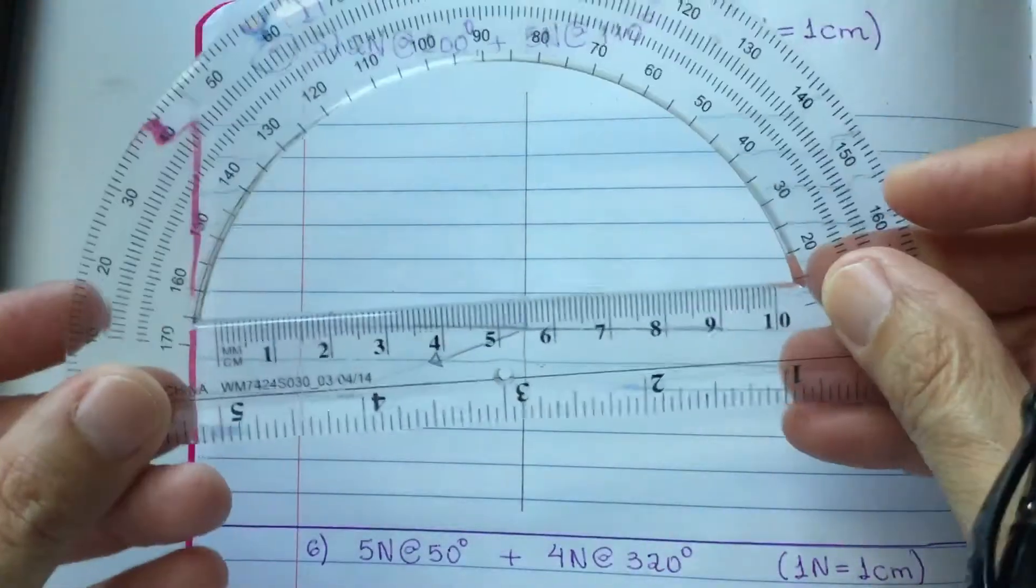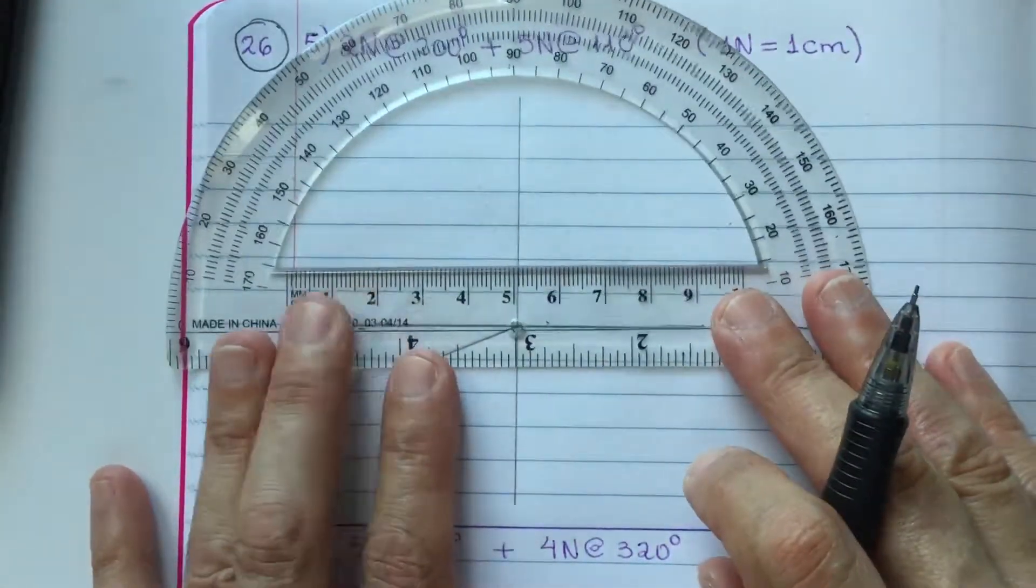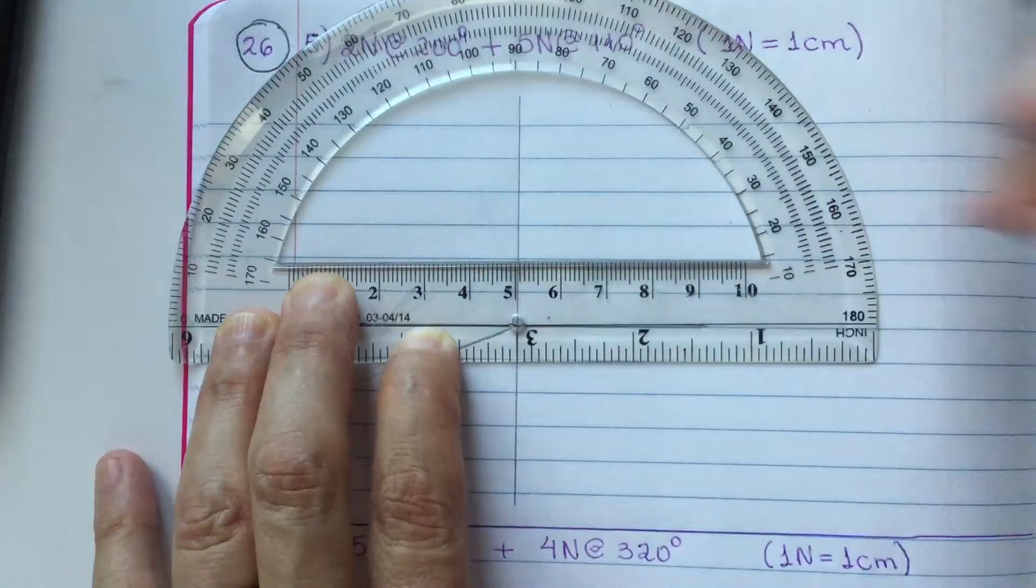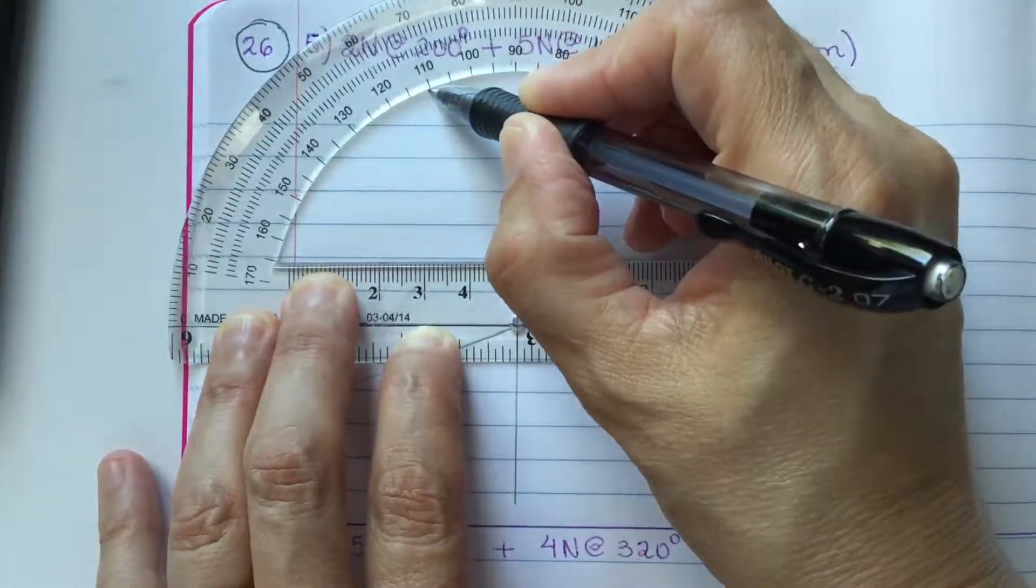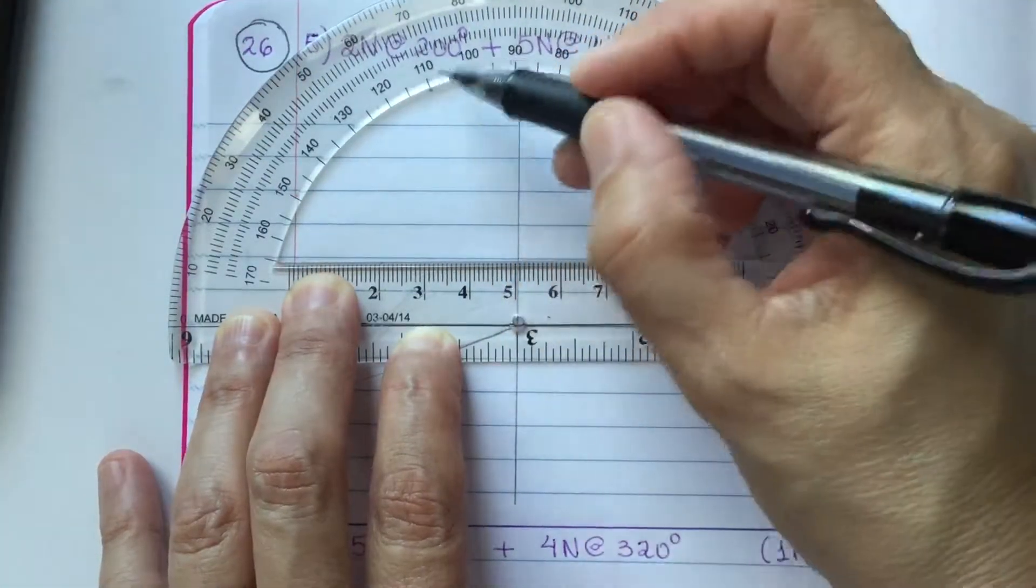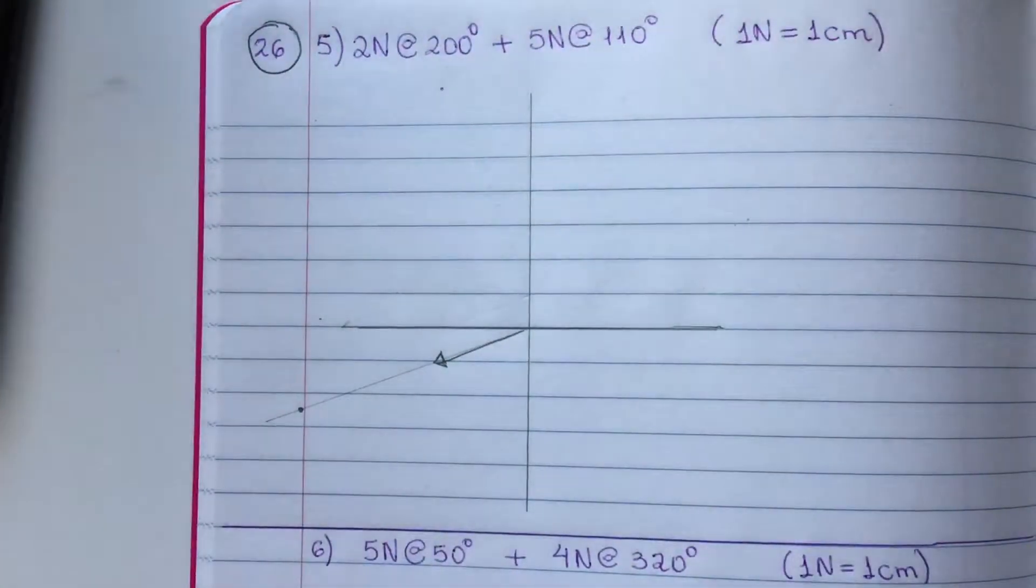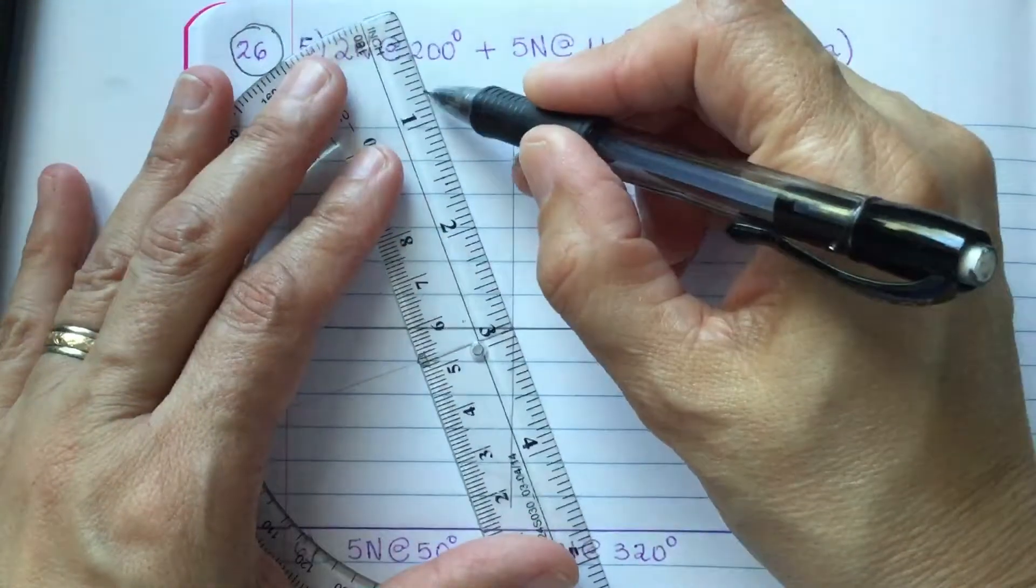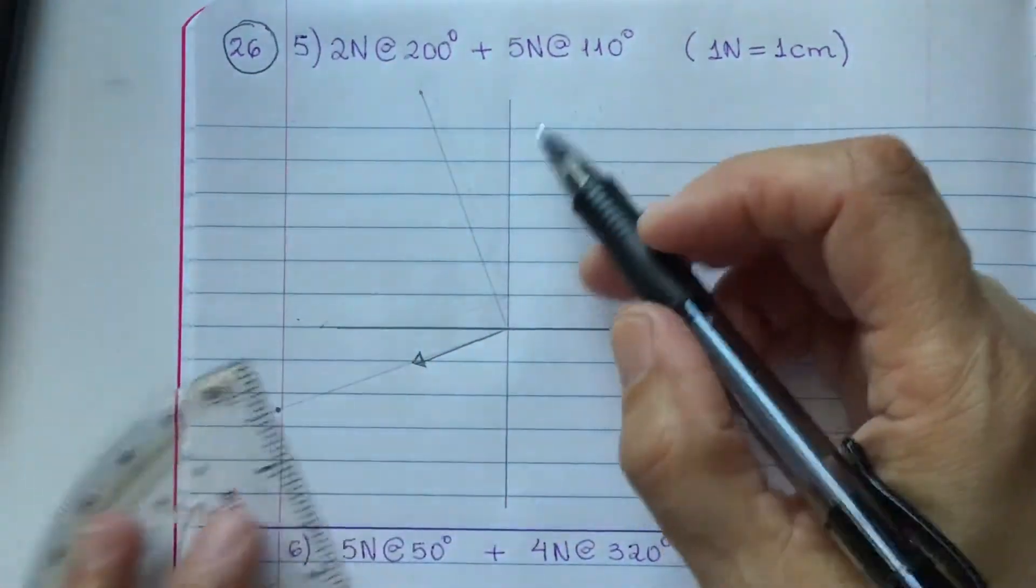So, place your protractor upright, line up with the center, and right here is 110. Make a little dot, connect with the center.